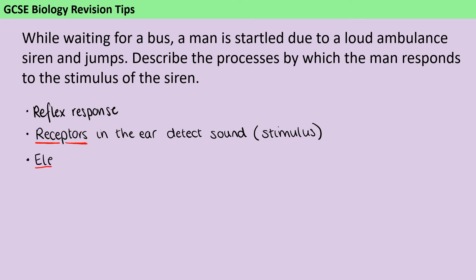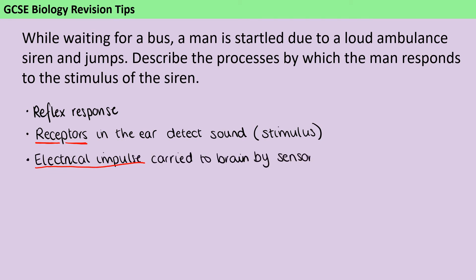Then that is going to be passed on as an electrical impulse, and that's carried to the brain by the sensory neuron. So we've got our three kinds of neuron, and I'm going to name each one. Then at the end of that neuron, we have that little gap between two neurons, which is called the synapse.